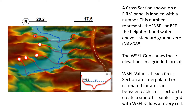A cross section shown on a FIRM panel is labeled with a number. This number represents the WSEL, or BFE, the height of flood water above a standard ground zero, or NAVD 88. The WSEL grid shows these elevations in a gridded format. WSEL values at each cross section are interpolated or estimated for areas in between each cross section to create a smooth, seamless grid with WSEL values at every cell.